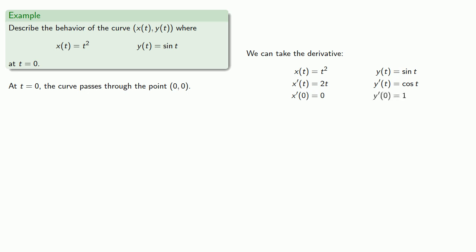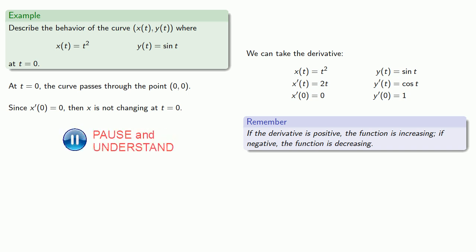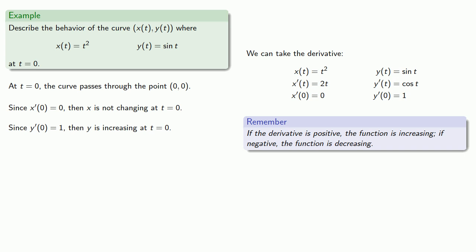The thing to remember about the derivative: if the derivative is positive, the function is increasing, and if the derivative is negative, the function is decreasing. Since x prime is equal to zero, x is not changing — it's not increasing and it's not decreasing. Since y prime of zero is equal to one, y is actually increasing at t equal to zero.